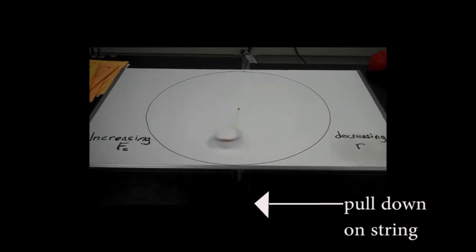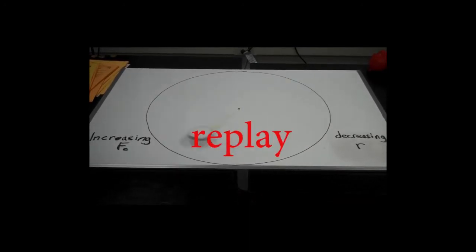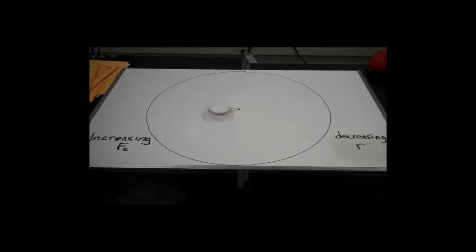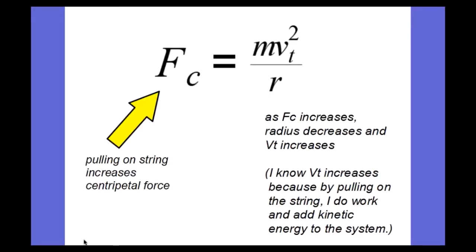This time I'm going to reach under and pull on the string, causing the string to get shorter. I have increased the centripetal force, forcing the radius to get smaller. At the same time we can see the speed of the puck is increasing. As I pull on the string, I increase the centripetal force, the radius decreases, and the tangential velocity increases — because I am doing positive work and adding kinetic energy to the system.